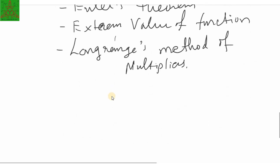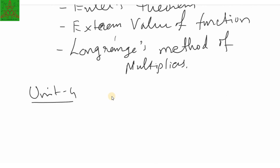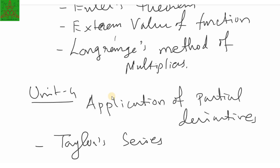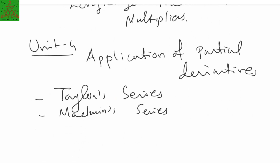Unit 4 is the application of partial derivatives. A partial derivative is when we differentiate a function with respect to one variable while treating all other variables as constants. The applications of partial derivatives include finding the series of a given function — we are talking about Taylor's theorem and Taylor series for functions of two variables, as well as the Maclaurin series. You have already studied Maclaurin and Taylor series for functions of one variable in semester two.